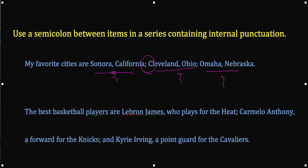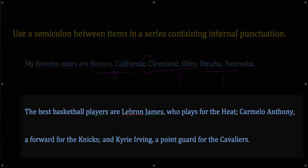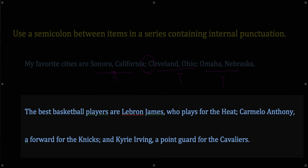One more example: 'The best basketball players are LeBron James, who plays for the Heat' — that's the first item in a series, it has its own internal punctuation; 'Carmelo Anthony, a forward for the Knicks'; 'and Kyrie Irving, a point guard for the Cavaliers.' Three items in a series, each containing its own comma. Therefore, to avoid confusion by just tacking on more commas, we use a semicolon there.